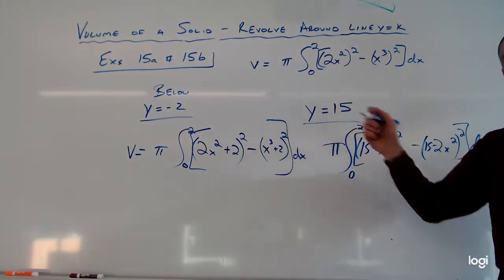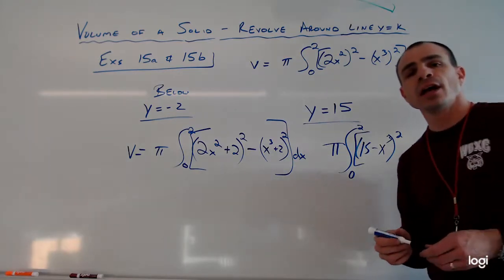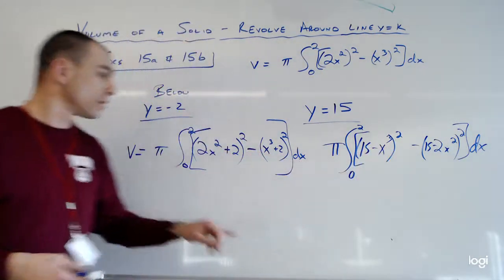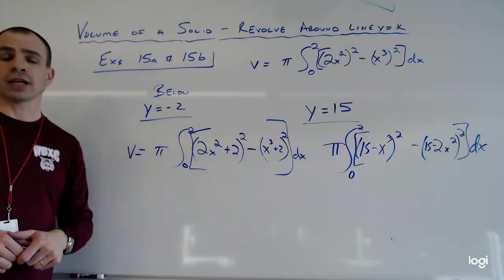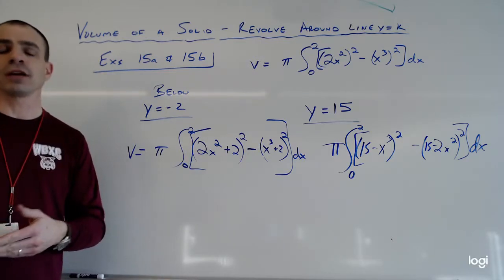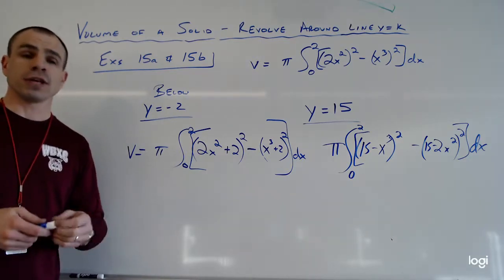So I apologize, it should be a 15, not a 5. And what that does is it changes. Notice that the X cubed is first, whereas before the X cubed was second. We have to change our functions in order to have our larger radius squared minus our smaller radius squared.